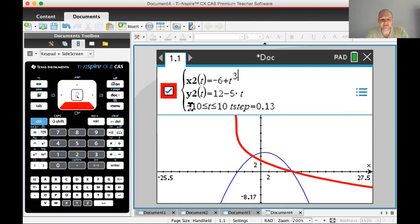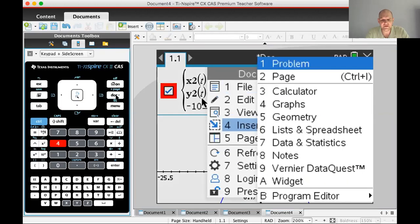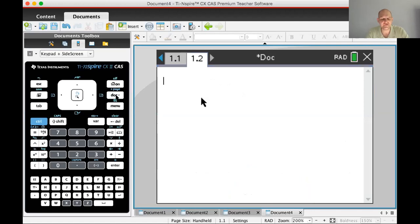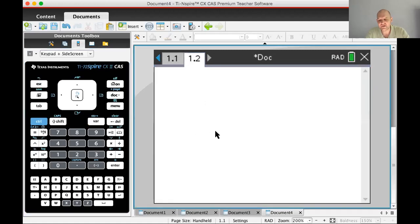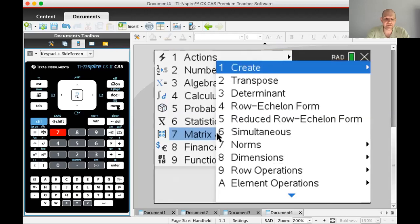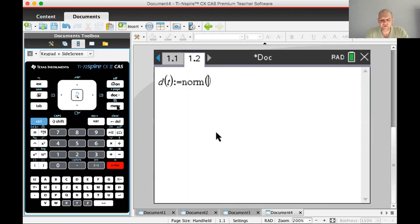I'm going to add a calculator page. I need to put in the distance formula, but I'm going to kind of cheat. I'm going to say d(t)—distance as a function of t—equals, and I'm going to use vectors. Menu 7-7, the norm. My vector's going to be [x₂(t), y₂(t)] minus the vector [x₁(t), y₁(t)].